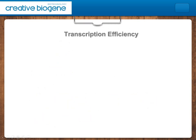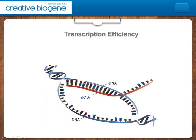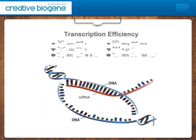Thirdly, transcription efficiency. Factors include GC contents, SD sequences, CpG content, TATA box, cryptic splice site and termination signal. These factors can affect transcription efficiency.